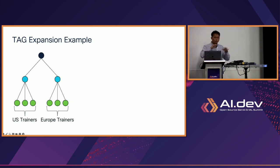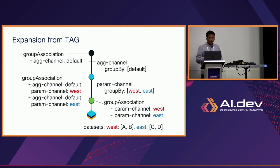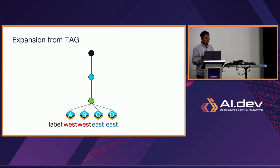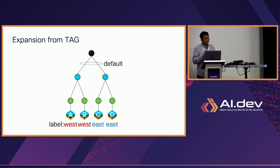Let's say I want to build a hierarchical topology which has two groups. This can be expressed with this TAG representation. What you want to look at is the dataset group. In this example, we have a west and east group, and each group has two datasets, AB and CD. We specify this grouping by using the group association and group-by attributes. Since we have four datasets, we need four workers — four trainers. Each trainer inherits the group information. Since we have two groups, we need to create two intermediate aggregators. At the top, we only have one global aggregator, which belongs to a default group, so we only need to create one global aggregator.